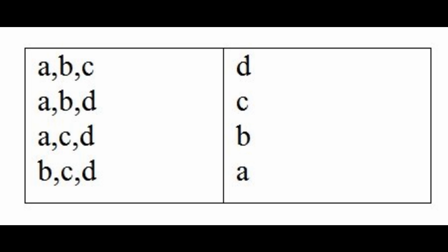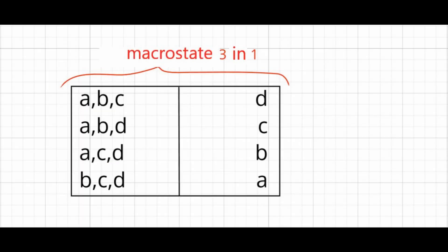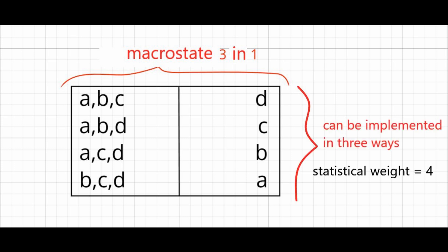The arrangement three and one is called a macrostate, while the different ways it can be realized are microstates. The number of microstates realizing each macrostate is called its statistical weight.